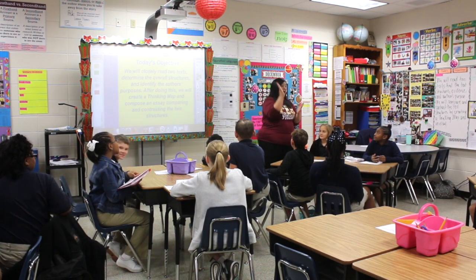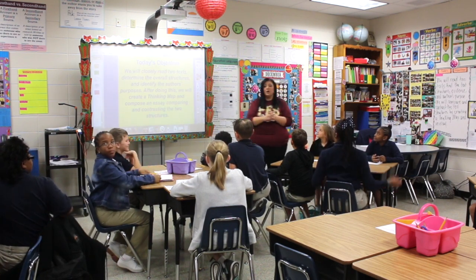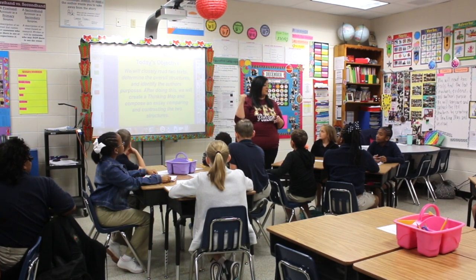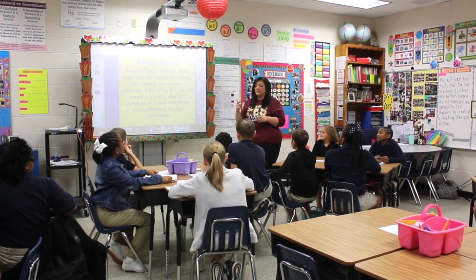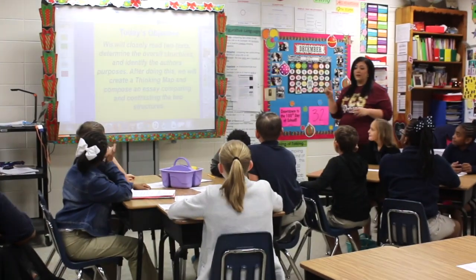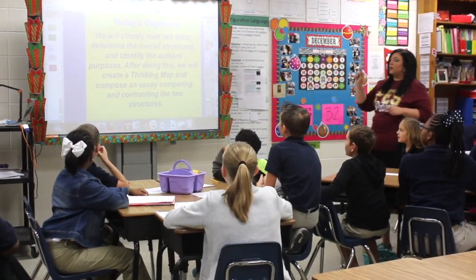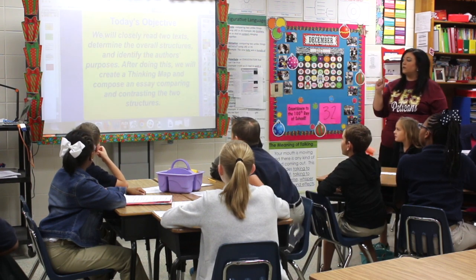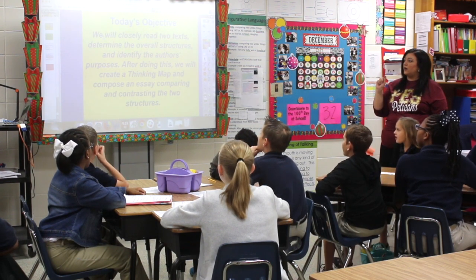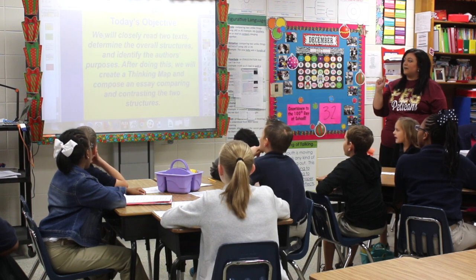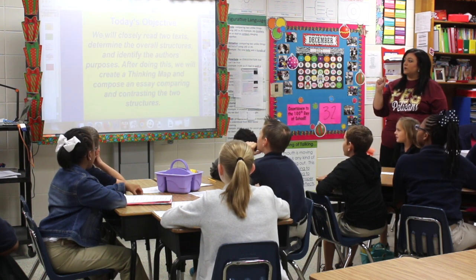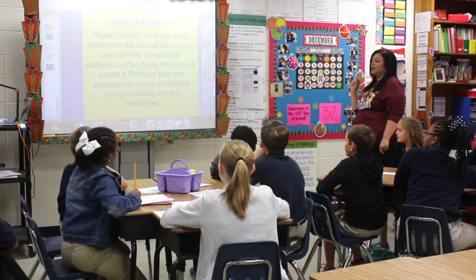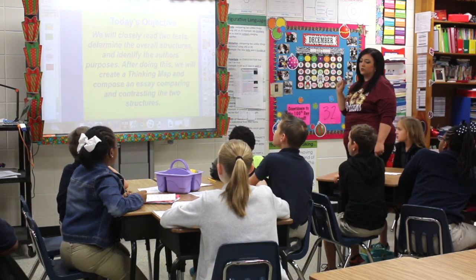Alright guys, so today — and all this week — we've been talking about text structures. Let's read our objective today to see what we're going to do. I want you to help me read it together. On three. One, two, three. We will also read two texts to determine the overall structures and identify the author's purposes. After doing this, we will create a thinking map and compose an essay comparing and contrasting the two texts.